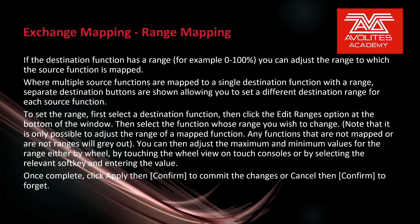If the destination function has a range — for example, 0 to 100 — you can adjust the range to which the source function is mapped. Where multiple source functions are mapped to a single destination function with a range, separate destination buttons are shown, allowing you to set a different destination range for each function. To set the range, first select a destination function, then click the Edit Ranges option at the bottom of the window, then select the function whose range you wish to change. Note that it will only be possible to adjust the range of a mapped function. Any functions that are not mapped or are not ranges will gray out.